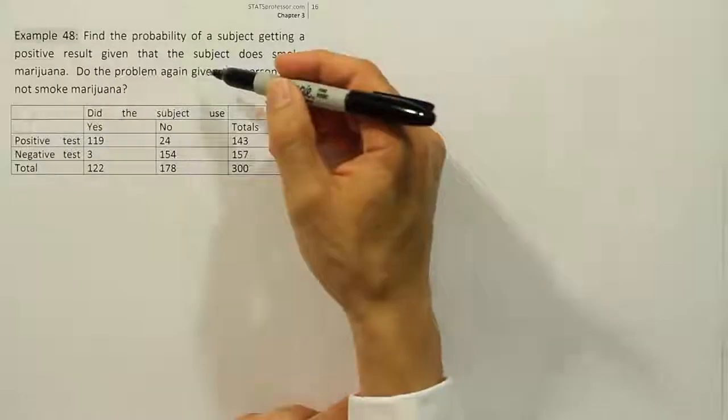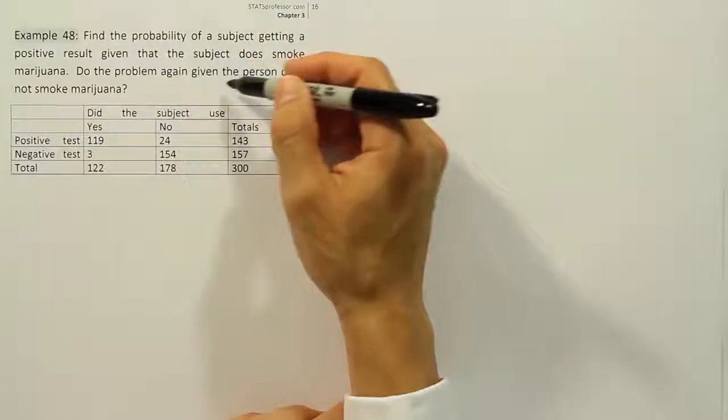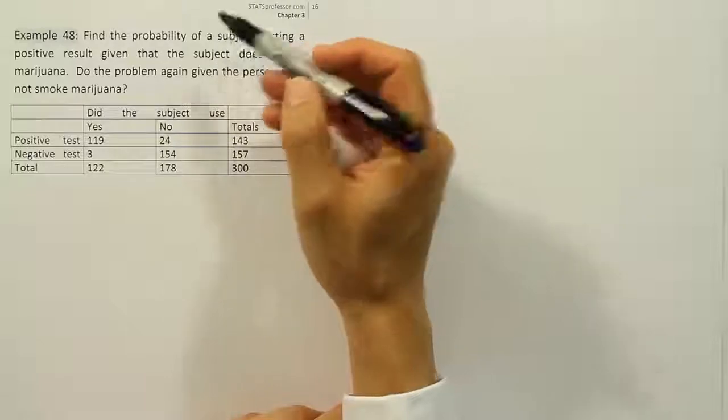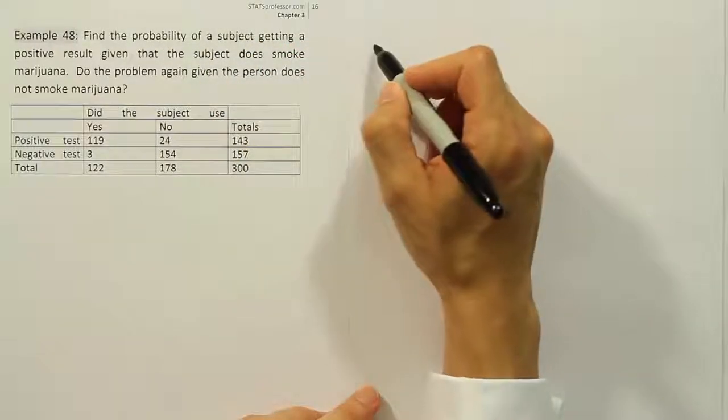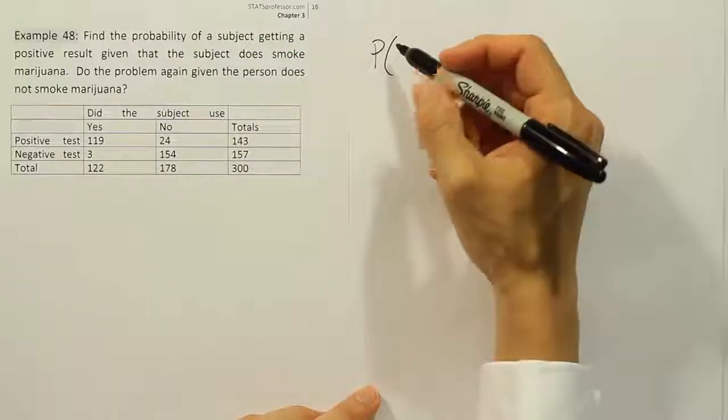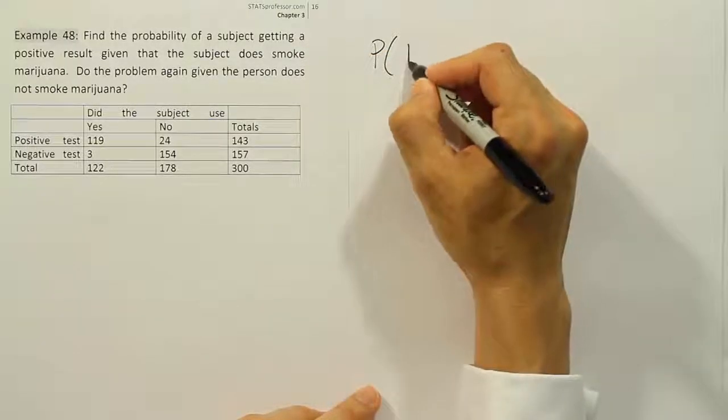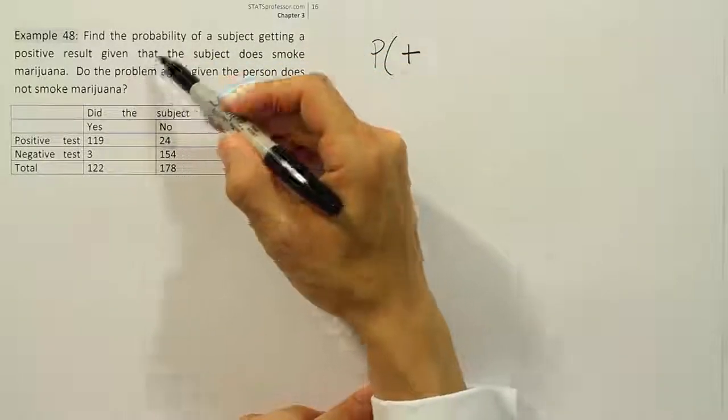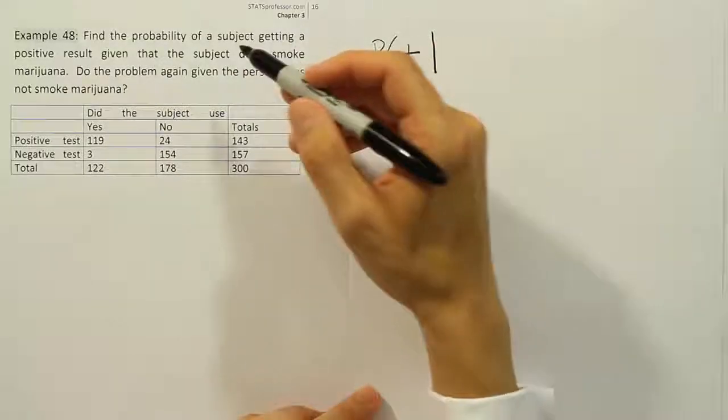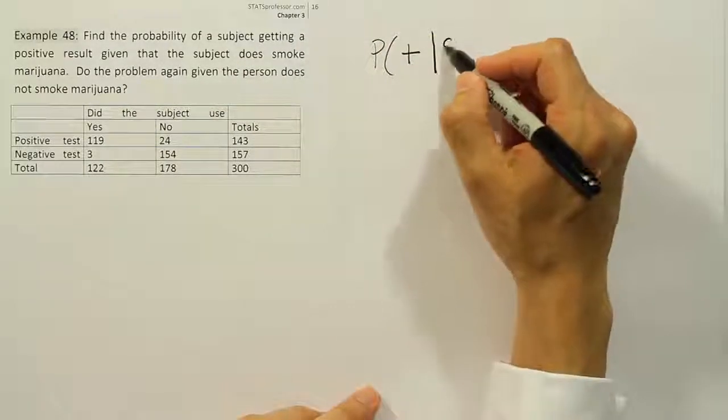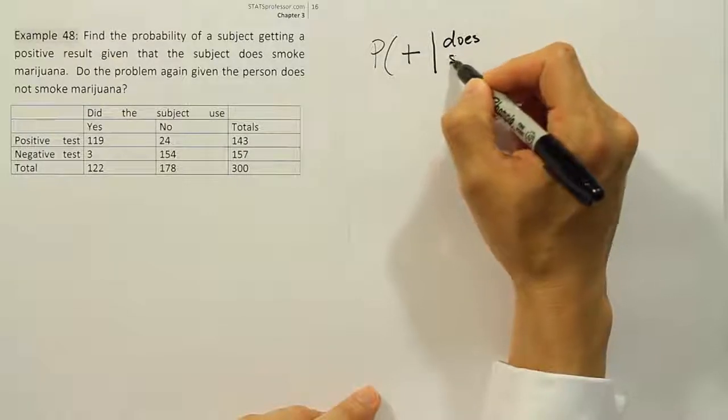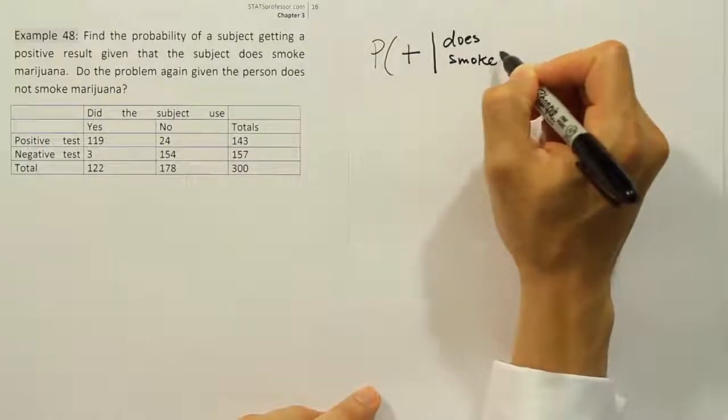They're both conditional probability because of the presence of the phrase 'given that,' and the fact that we're taking just one subject and it's a probability problem. So let's write out the two probabilities. The first one is the probability of a subject getting a positive result. Then the phrase 'given that' is a straight bar. The subject does smoke marijuana, so we're going to write 'does smoke.'